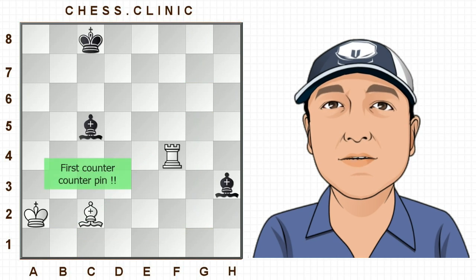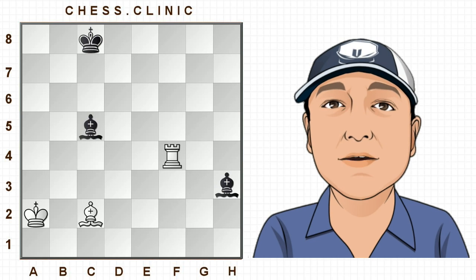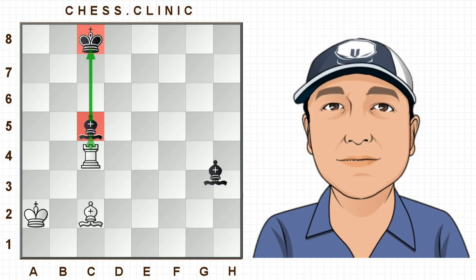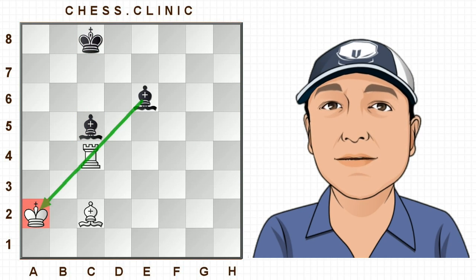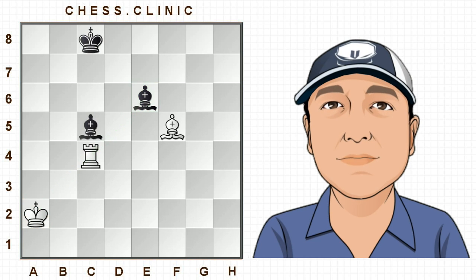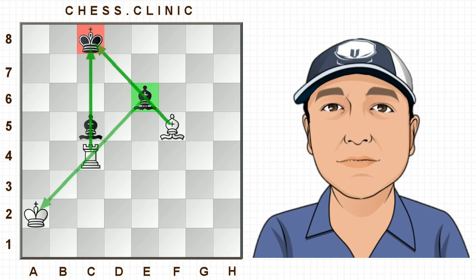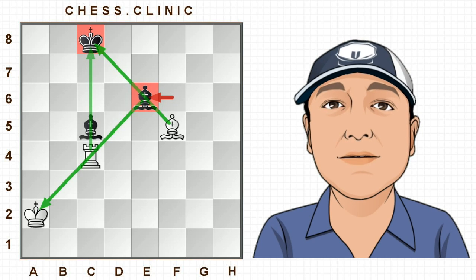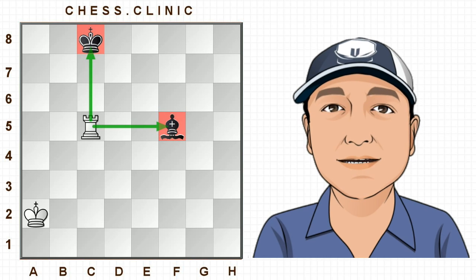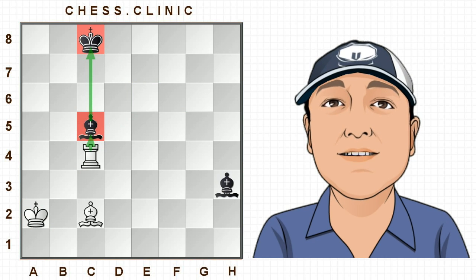Let's move on — this is our first counter-counter pin. I composed this position a few days ago for this tutorial. White is the exchange up but black's got the two bishops so it's not easy. We've got rook here pinning the bishop, and now our own rook can get pinned with bishop to e6. However, bishop b6 is a counter pin, but we've got what we call a counter-counter pin with bishop to f5. So the bishop which is pinning our rook, which is pinning the other bishop, is itself being pinned. The only move black can play here is bishop takes bishop, but then rook takes — check — and we pick up the bishop.